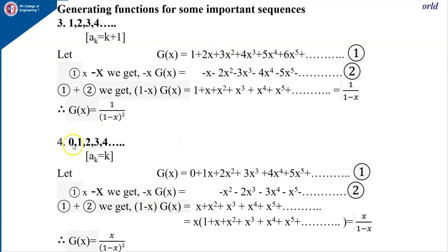Let us consider the next example: the sequence 0, 1, 2, 3, 4, and so on. You can observe that a_k is equal to k. That is, if k equals 0, I get a_0 which is 0. If k equals 1, I get a_1 which is 1, and so on.